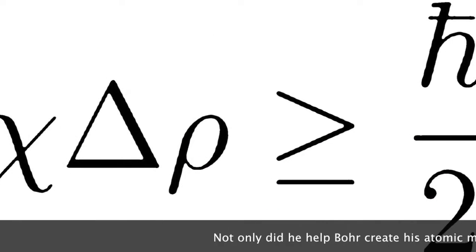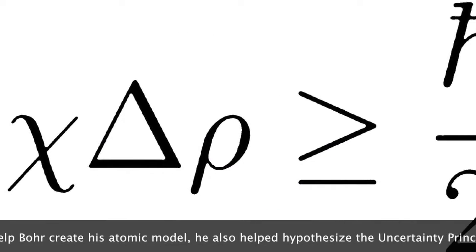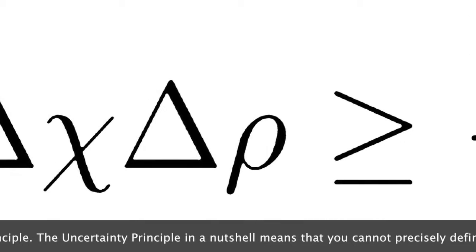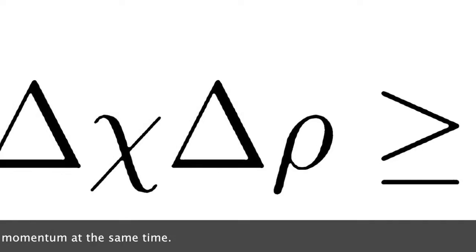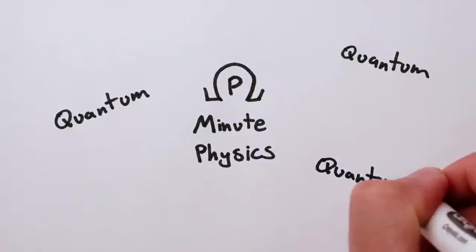Not only did he help Bohr create his atomic model, he also helped hypothesize the uncertainty principle. The uncertainty principle, in a nutshell, means that you cannot precisely define a particle's position and momentum at the same time. Quantum mechanics is weird, right?